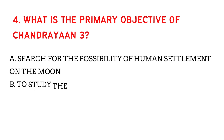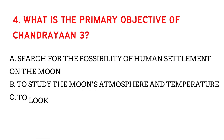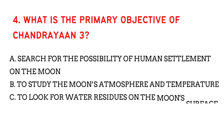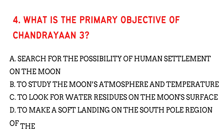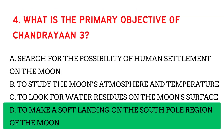What is the primary objective of Chandrayaan 3? The answer is to make a soft landing on the south pole region of the moon.